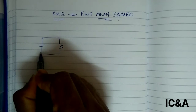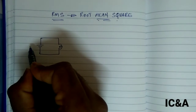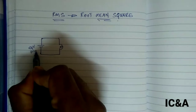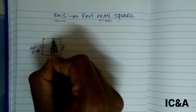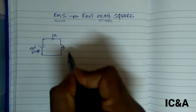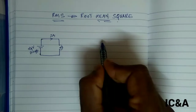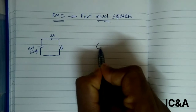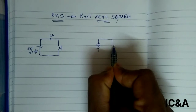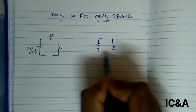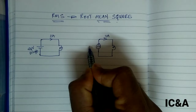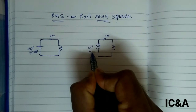First, let's look at a DC circuit. This is 24V DC as the supply voltage, with a load connected — 2 amperes of current flow. Then in the AC circuit: 24V AC supply with the same equal load, and 2A current flow.